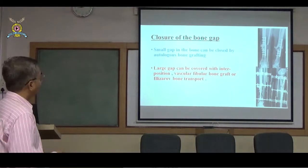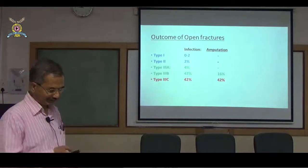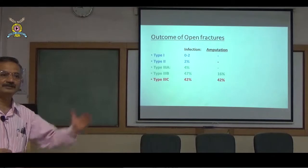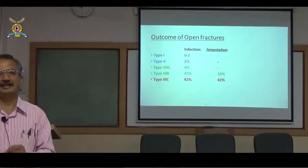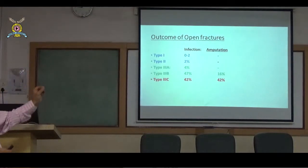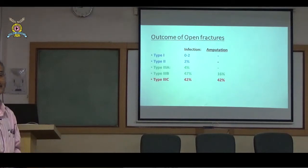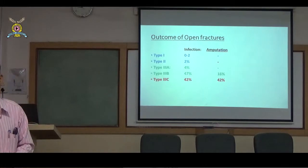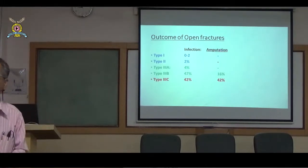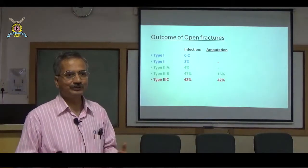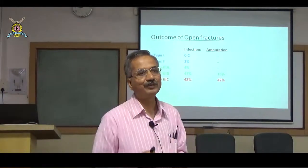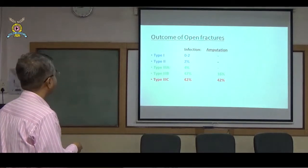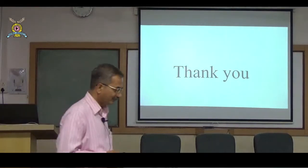Outcomes from analysis of 1500 compound fractures: Type I, II, and IIIA — minimal infection rates. Type IIIB — infection rate 47%, amputation rate 16%, because bone was exposed allowing infection to take hold. Type IIIC — amputation rate 42% due to vascular damage; many patients arrive after warm ischemic time has elapsed, leading to amputation. Thank you for your attention.